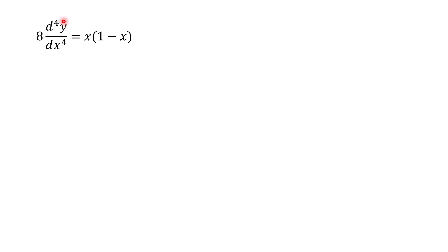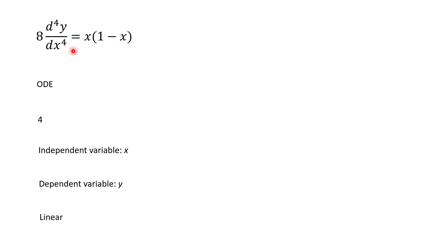How about this one? y depends on x. This is a fourth derivative, so ODE, fourth order. y depends on x, and this one is actually linear — the derivatives of y with respect to x are each multiplied by something with x or a constant, which fits our format, and the right side is only a function of x.